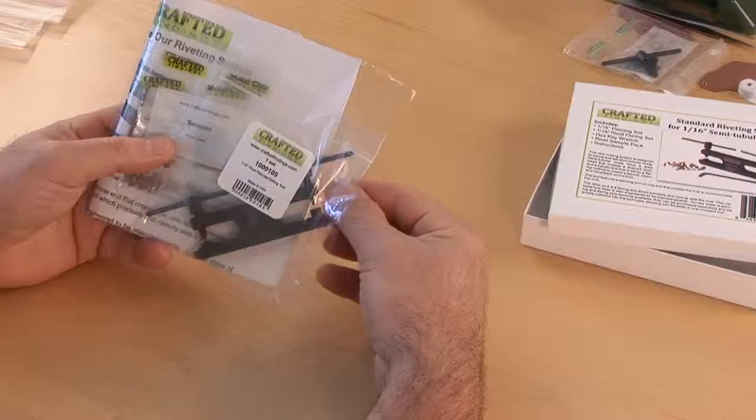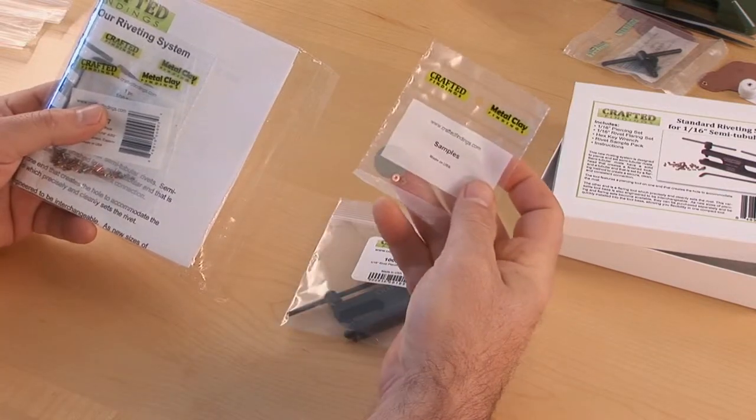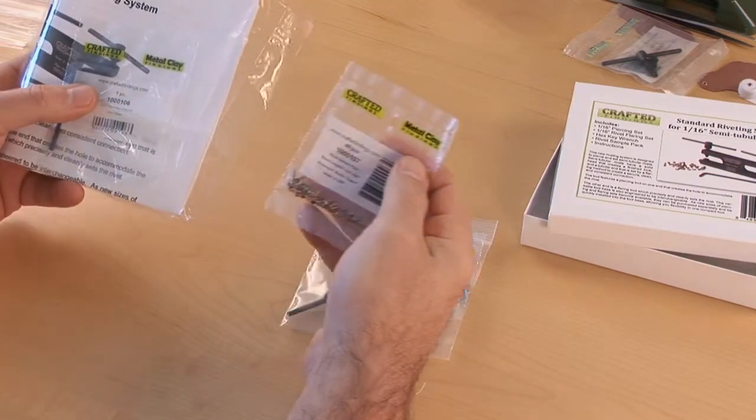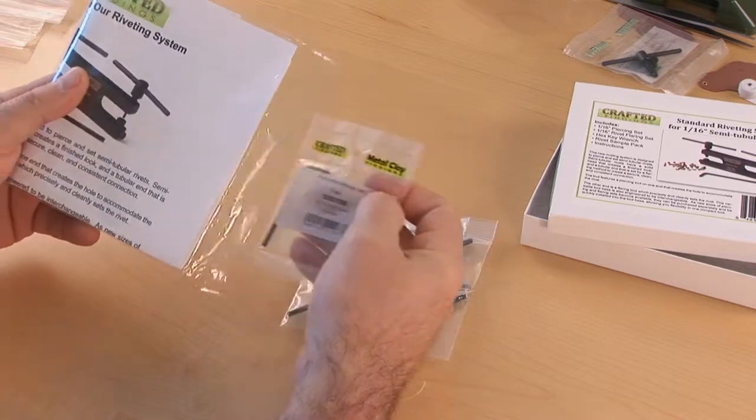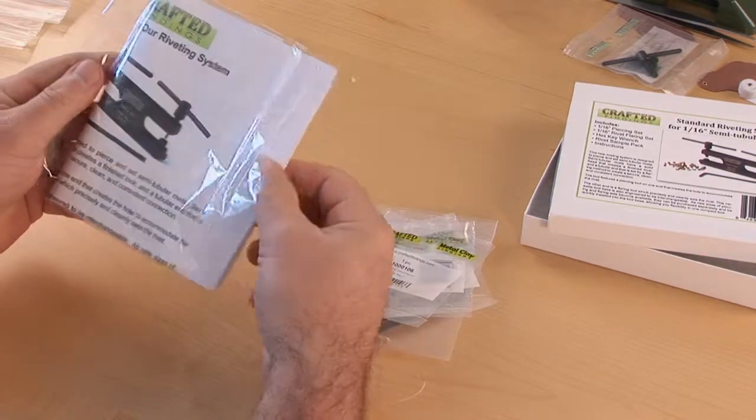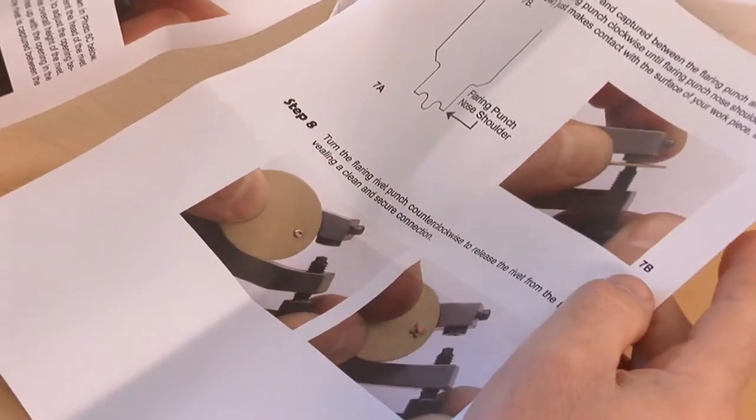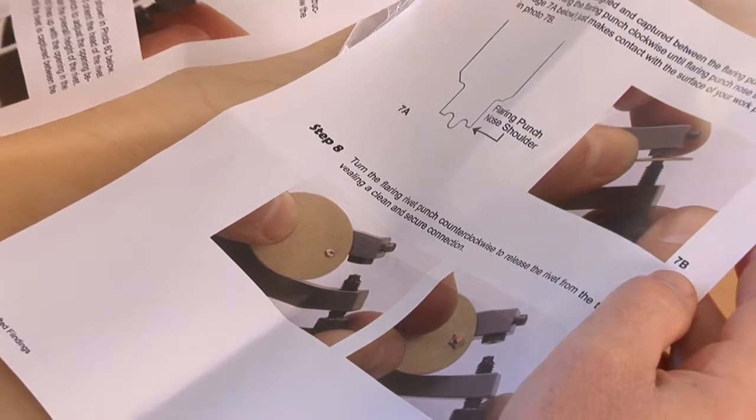The kit includes, of course, the riveting tool itself, some sample blanks to practice on, a selection of rivets and accents, this hex key wrench for changing out tool components, and last but not least, a detailed how-to guide to help you get the most out of your Crafted Finding system.